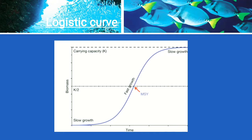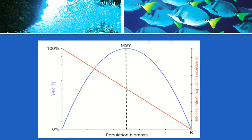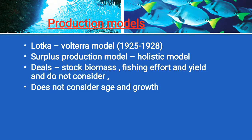So we have to know this. Similarly, this diagram shows the intrinsic rate of population increase R and the Maximum Sustainable Yield, combining both. To calculate the Maximum Sustainable Yield, there are specific models we use.